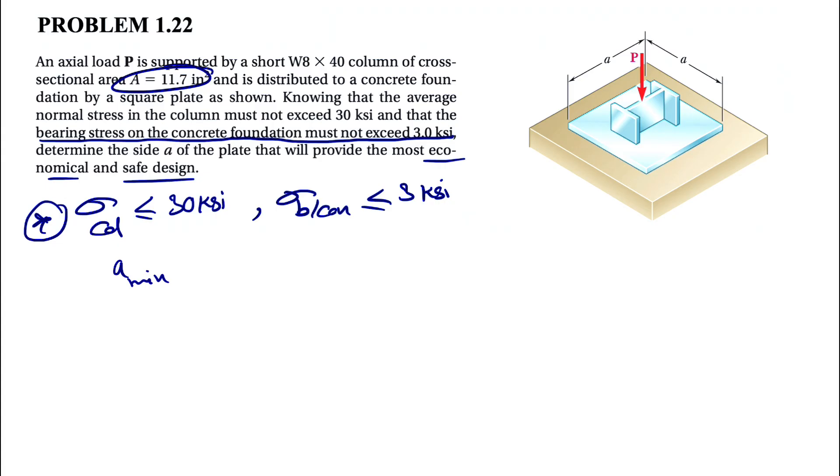Let's start with the first constraint where the average normal stress of the column cannot exceed 30 KSI. The average normal stress is sigma = P/A, which cannot exceed 30 KSI. Let's go with the maximum for now, and any value less than that would be safe.